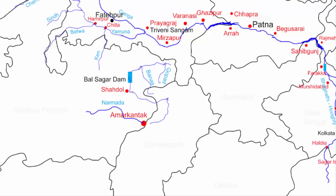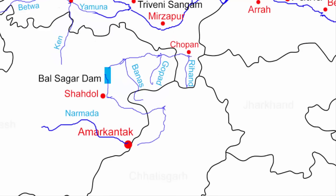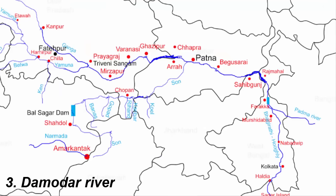The Son continues northeast for about 100 kilometers, where the Gopad river joins it. In about 40 kilometers the Son enters Uttar Pradesh, running parallel to the Ganga to the north. At the town of Chopan in Sonbhadra district, the Rihand river joins the Son, and about 20 kilometers further the Kanhaar river also joins. The Son reaches the tri-junction border of Uttar Pradesh, Jharkhand, and Bihar, flowing along the Bihar-Jharkhand border for 50 to 60 kilometers with the Koyal river joining along the way, before heading northeast to Patna where it joins the Ganga.